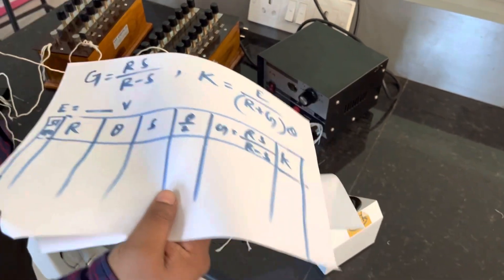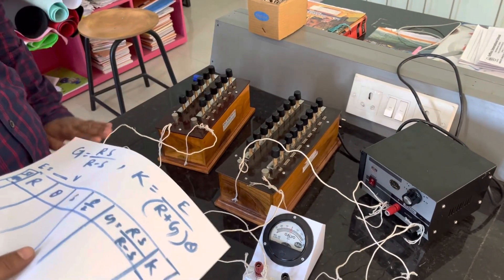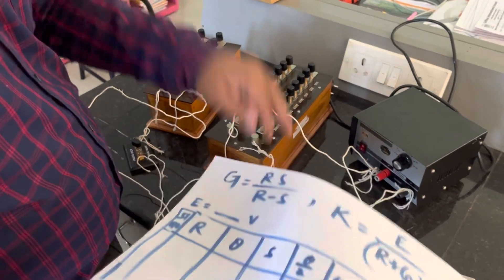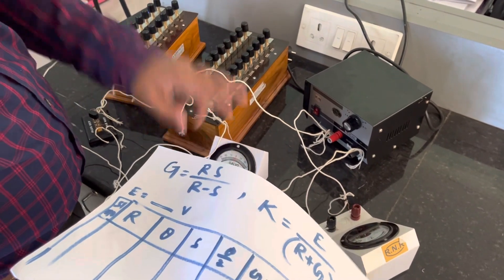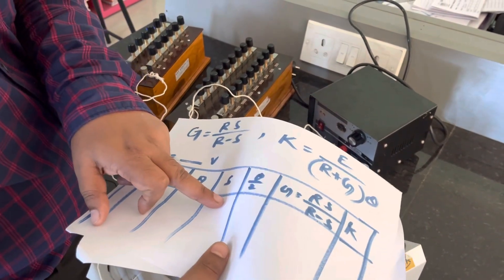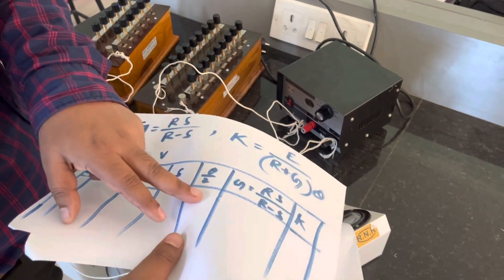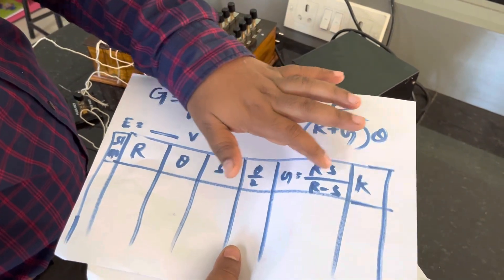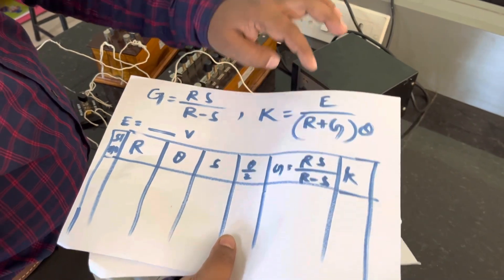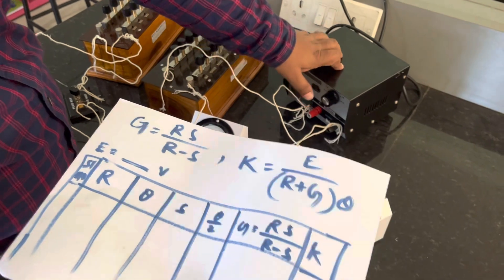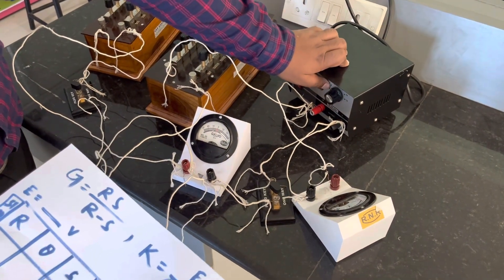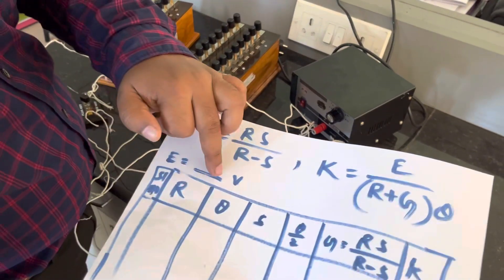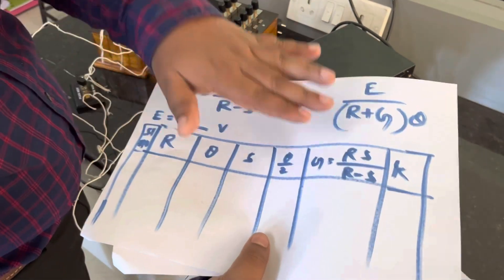For whatever value of S gives half deflection θ/2, we write down S and θ/2. Once we have all four values — R, S, θ, and θ/2 — we can calculate G using R×S/(R−S) and also find K using E/(R+G)×θ. Before starting the experiment, note down the voltage E you are using — suppose it is 2 volt or 4 volt.